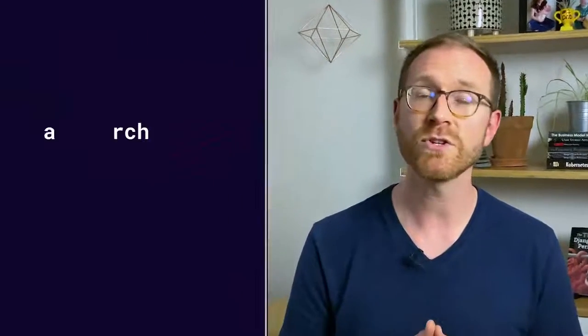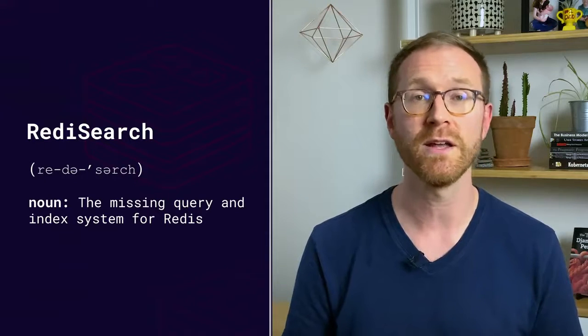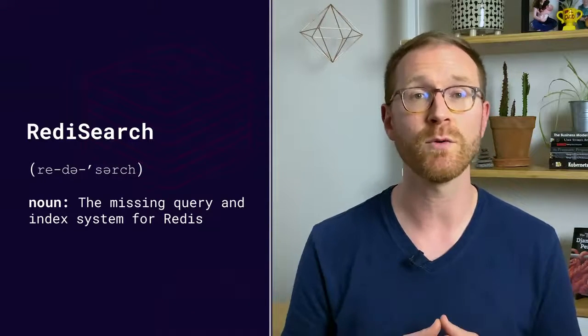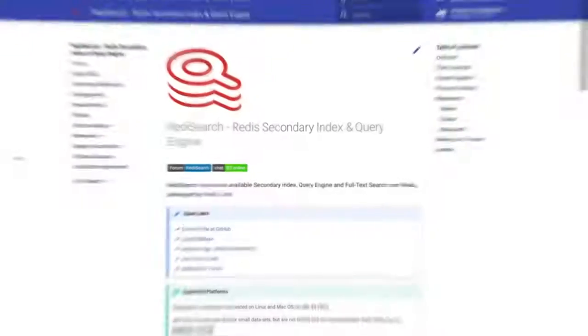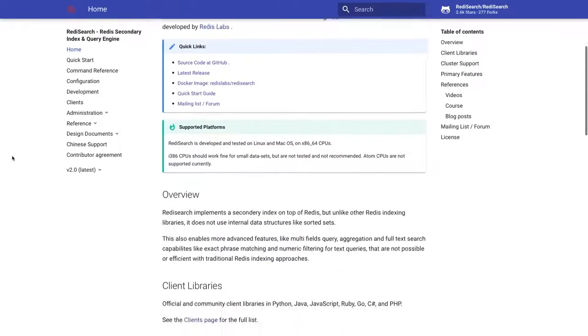Redis Search is the missing query and indexing system for Redis. If you store structured data in Redis, you should really install Redis Search. Doing so lets you run SQL-like queries. You also get the kinds of aggregations you need to build reports and a robust full-text search engine. If you want to get hands-on, you can try Redis Search with the official Docker image. Read more about how it works in our documentation, where we have a quick start tutorial.